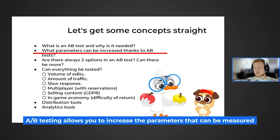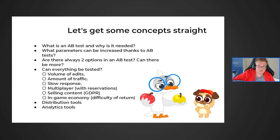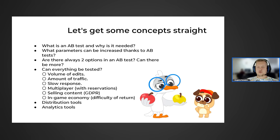What parameters can be improved through A-B testing? Basically, we can improve any parameters that can be measured. Is it possible to test technical parameters — the number of ANR crashes, FPS, and similar things? Great question. The tools we'll discuss provide such capabilities, and you can use A-B testing to check these kinds of parameters.